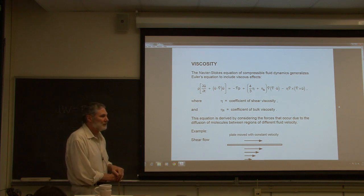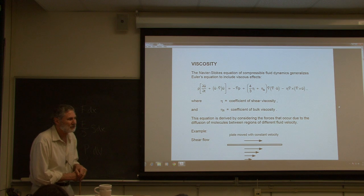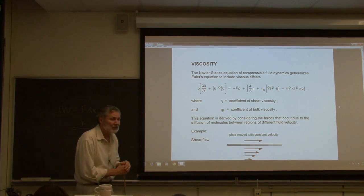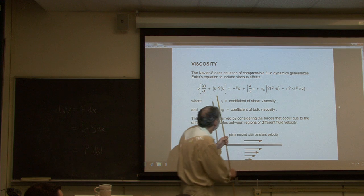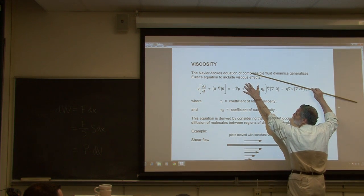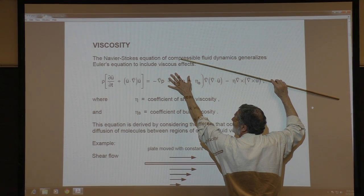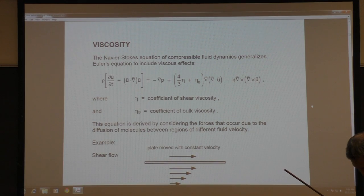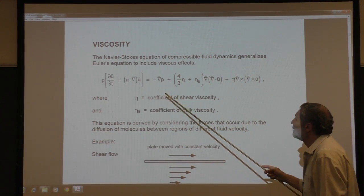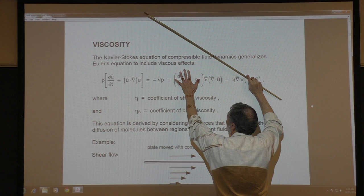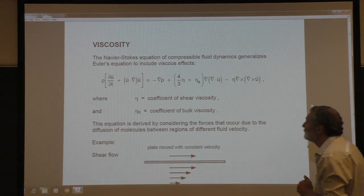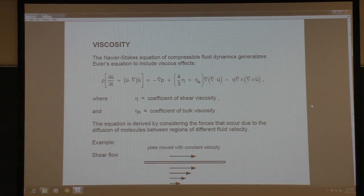How do we do theoretical acoustics including dissipation? We've got to generalize Euler's equation — there are now viscous forces, which we neglected before. When we derived Euler's equation before, you'll recognize that as the exact Euler's equation. For linear acoustics, we linearized it. But that was in the absence of dissipation. When you include dissipation, this leads to what's called the Navier-Stokes equation.